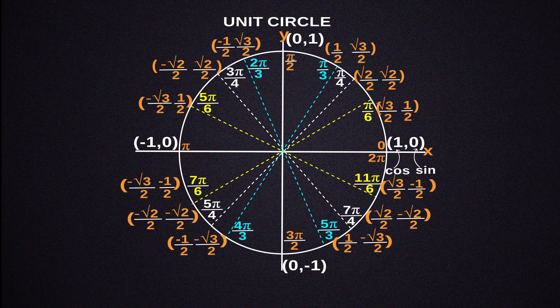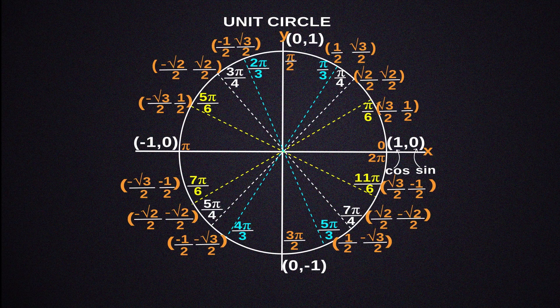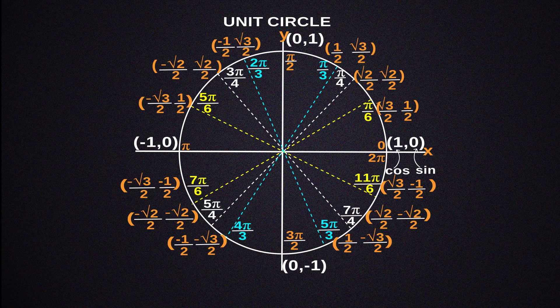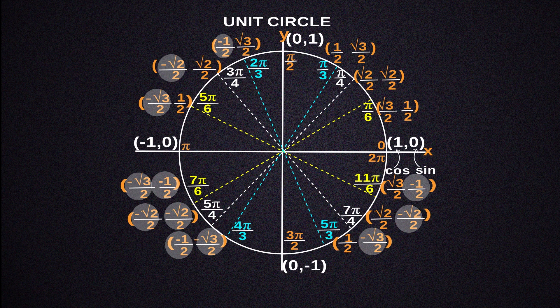The points for the remaining angles in the circle can now be determined using the same principle. The only distinction is that you might be under a negative sign. Your coordinates might contain a negative sign, so keep that in mind.